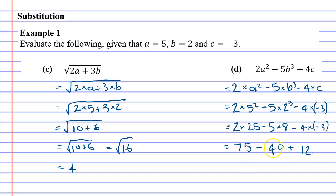So it's 75 minus 40 plus 12, which is 35 plus 12, or 47.